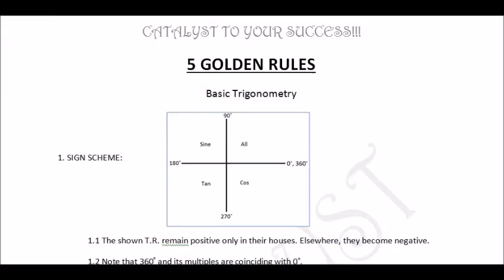In the first quadrant, all trigonometrical ratios — sine, cos, tan, and their counterparts — are positive. So sine 89°, tan 78°, and cosine 43° are all positive in the first quadrant. In the second quadrant, sine and its counterpart cosec will be positive, while all other trigonometrical ratios will be negative.